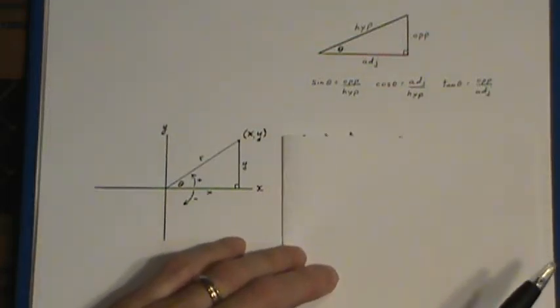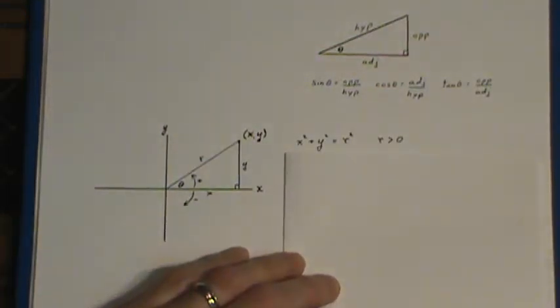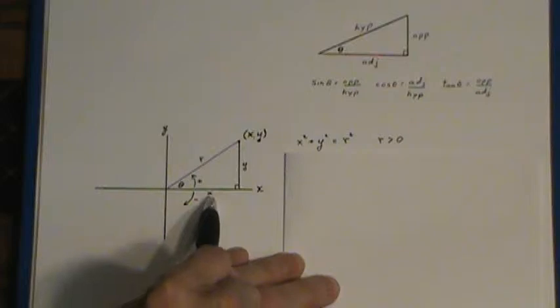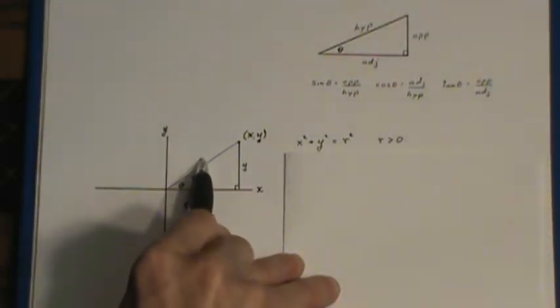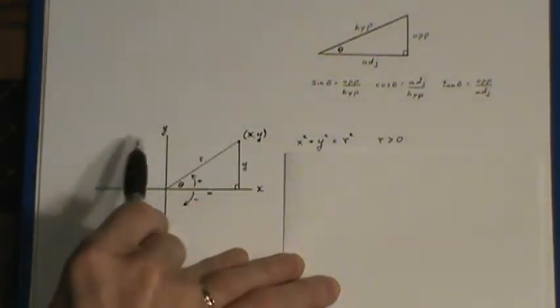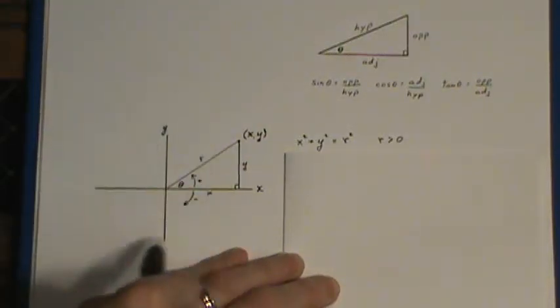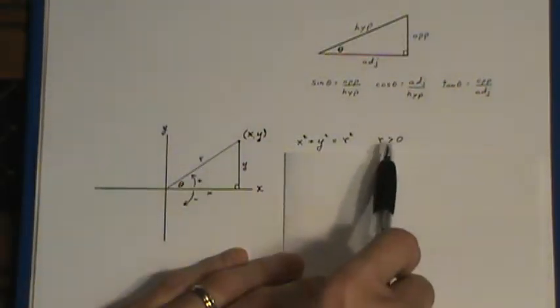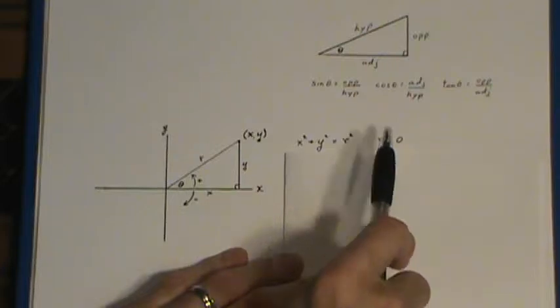Now the first thing to notice here is the Pythagorean relationship x squared plus y squared equals r squared. Now x and y can be positive or negative depending which quadrant we land in, but by definition we always make the r value positive.